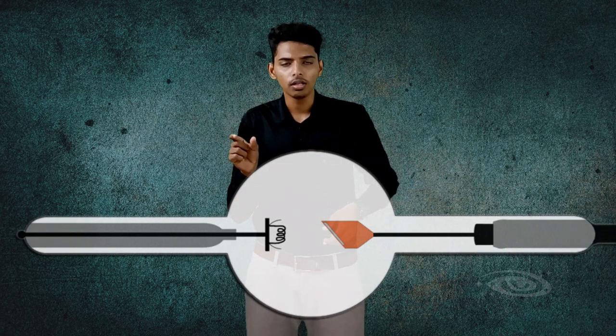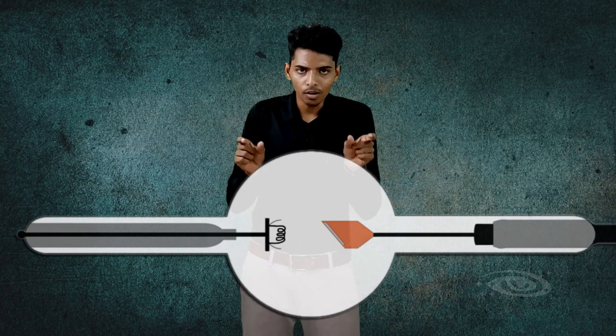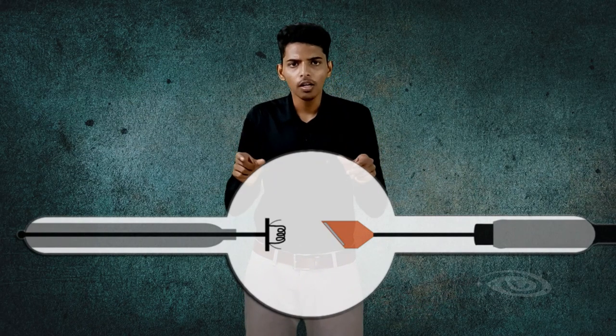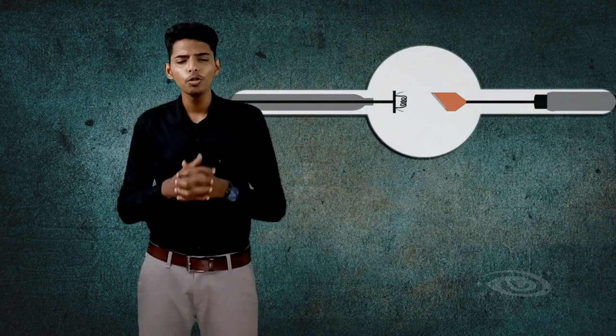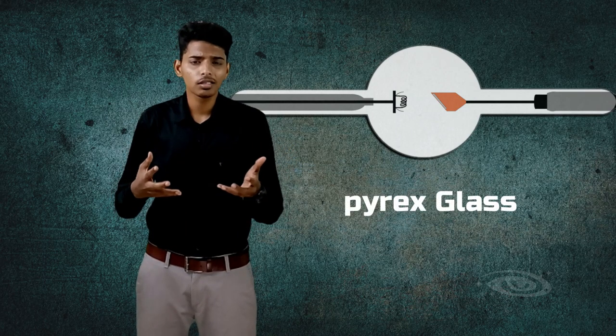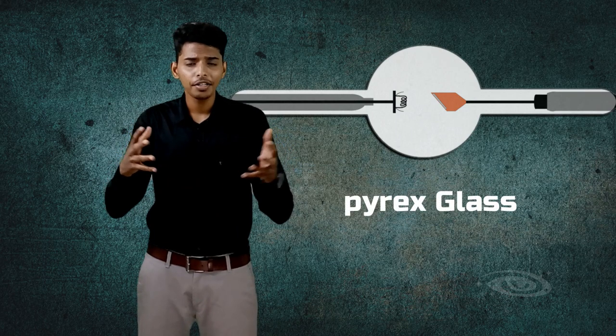Before going into the principles of X-ray production, let me describe the components present inside the tube. Here I have a cathode which is made up of tungsten, and here I have an anode which is also made up of tungsten. I'll explain why tungsten is used in the hot cathode ray tube in the middle of the video.